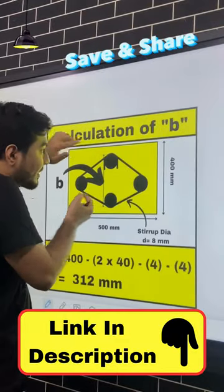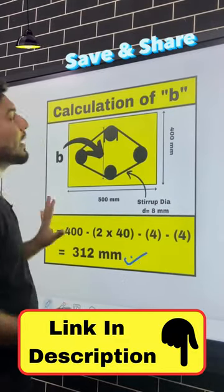Similarly, you have to find out vertical center to center distance from centerline of stirrup. So you have to use 312 mm. We will find out these two.